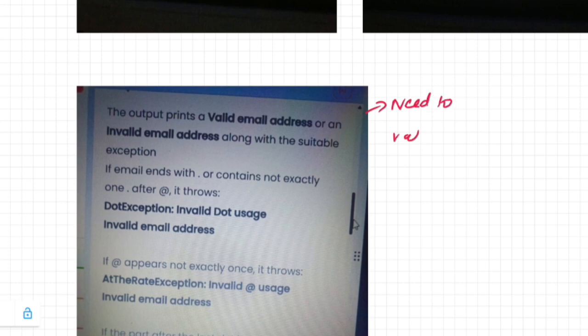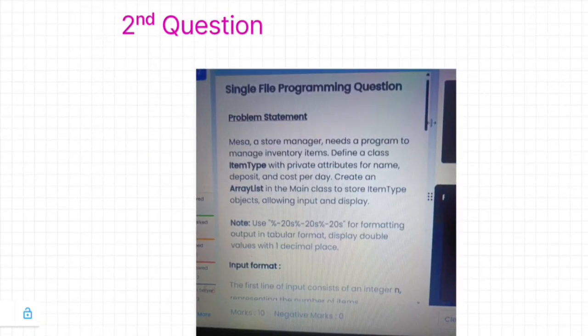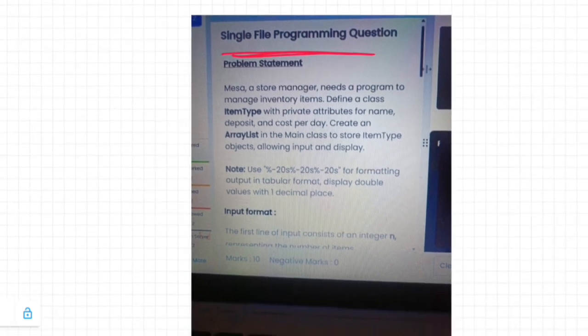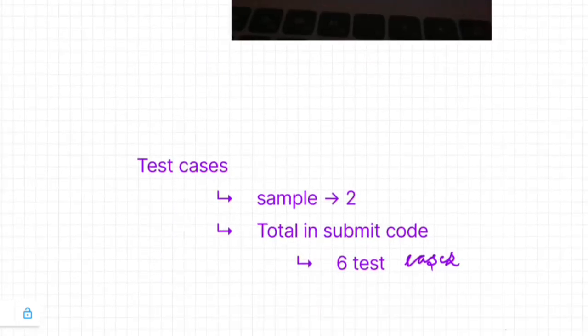They provide expressions in different types — observe them and provide your output according to the expression. The second power coding question is to manage inventory items. They provide a class called Item with private attributes like name, deposit, and cost per day. You need to create an ArrayList in the main class and store the item types given. Based on the input/output format, write accordingly. Note that for this last power coding question, the main function is already provided.